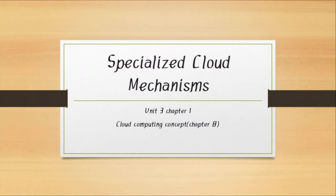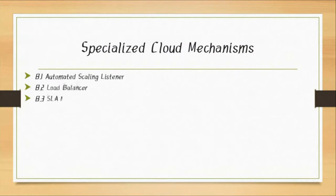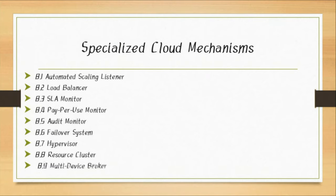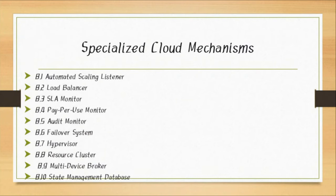This is the last session that we will cover. Previously we have seen different mechanisms. There are 9 types of mechanisms covered. Today we will see the last one: state management database.